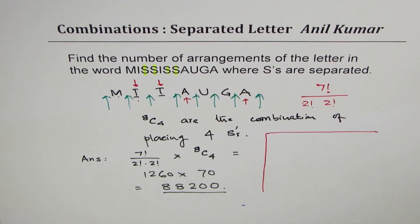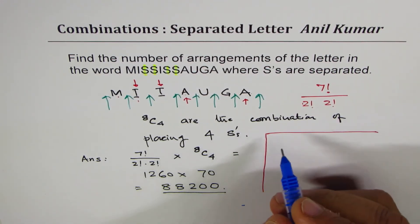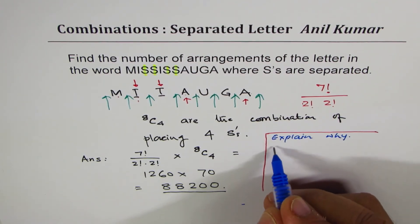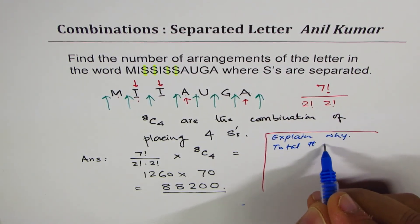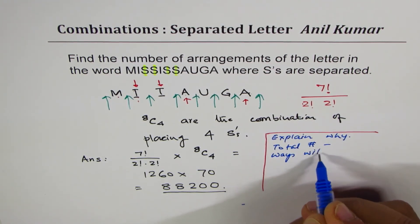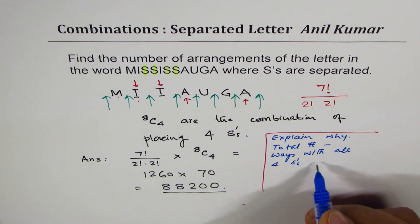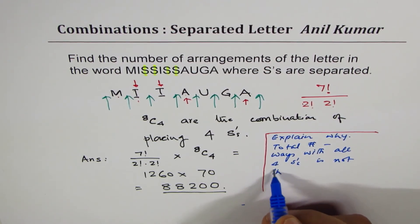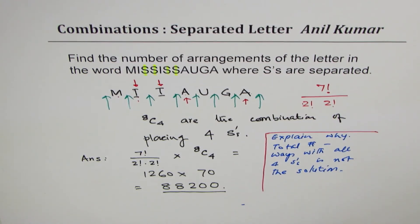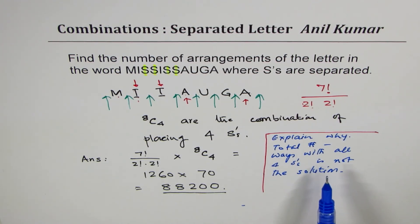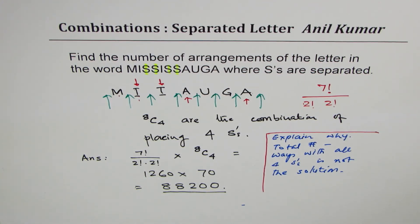A challenge question for you: explain why total number of arrangements minus arrangements with all four S's together is NOT the correct solution. If you understand that, you've truly understood this video. Feel free to write your comments, share your views and questions.